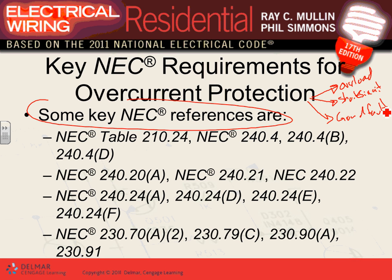Every time you hear the term overcurrent protection device — like a fuse or circuit breaker — you have to understand this piece of equipment protects your conductors and equipment from an overload condition. If the conductor is rated to carry 15 amps and you're suddenly pulling 30 amps out of it, that's called an overload condition.